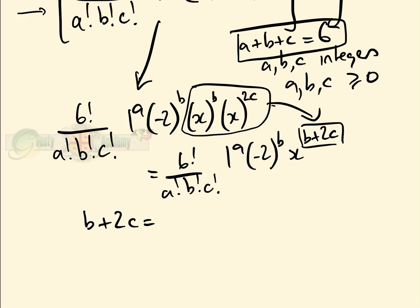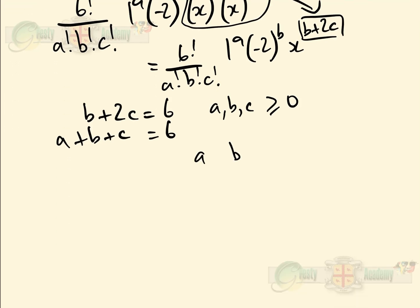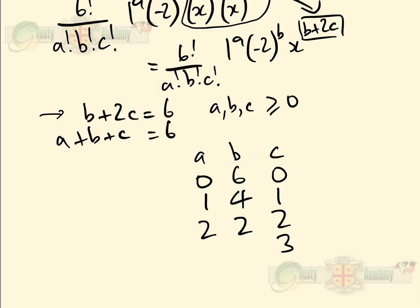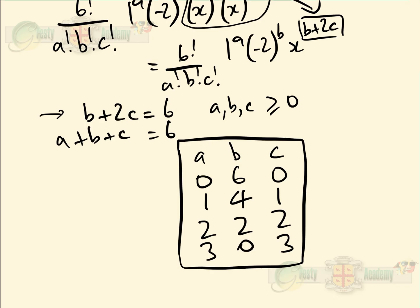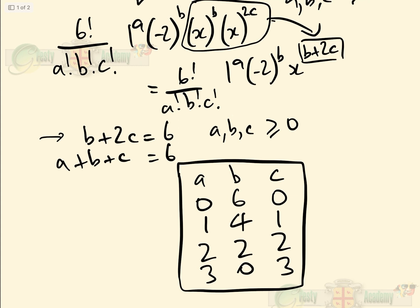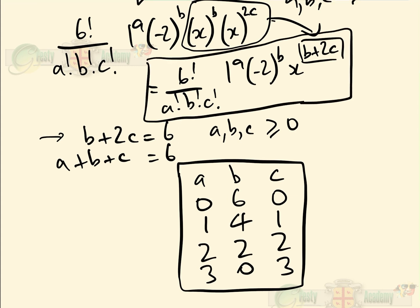We have two criteria: b plus 2c equals 6, and a plus b plus c equals 6, with a, b, and c being non-negative integers. We can draw a table of all possible values. If c is 0, then b equals 6 and a equals 0. If c is 1, then b equals 4 and a equals 1. If c is 2, then b equals 2 and a equals 2. And if c is 3, then b equals 0 and a equals 3. Those are the four possible combinations, and we substitute each into the general term and sum them all.